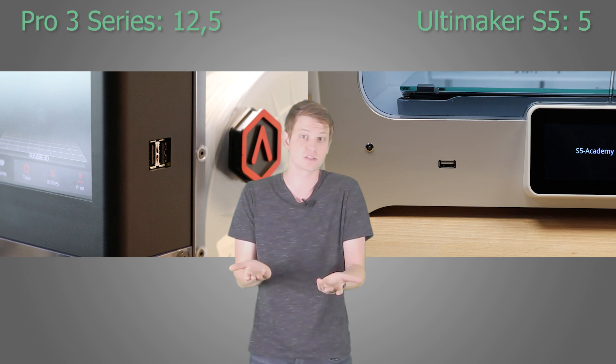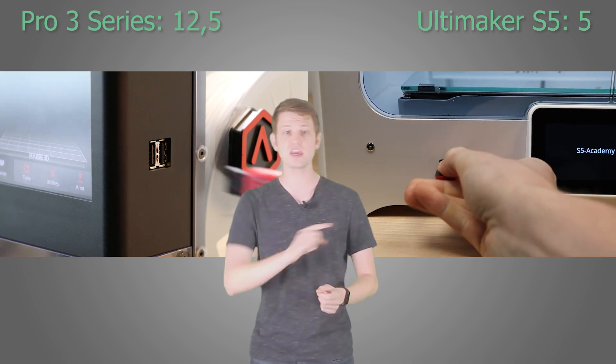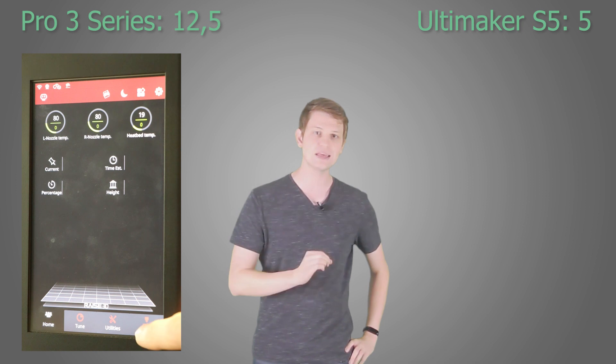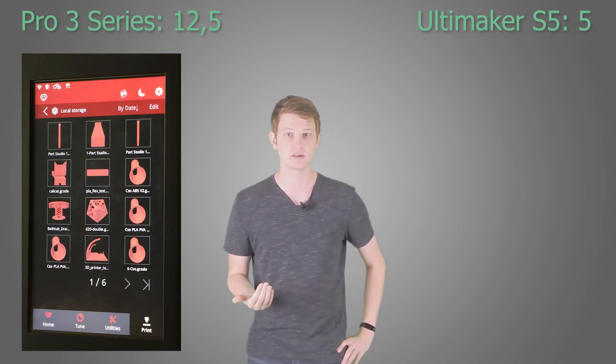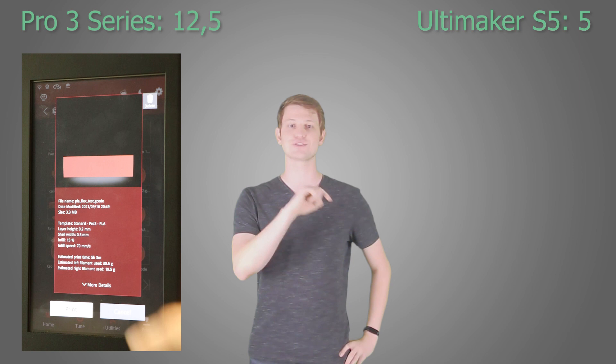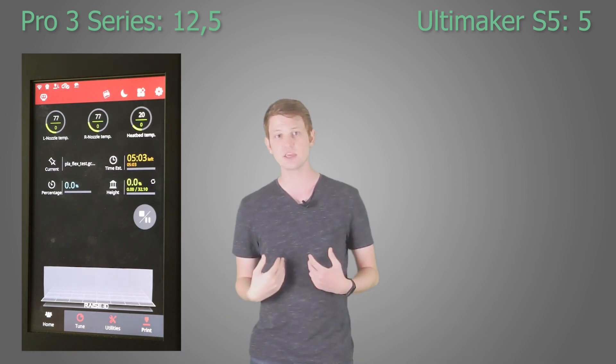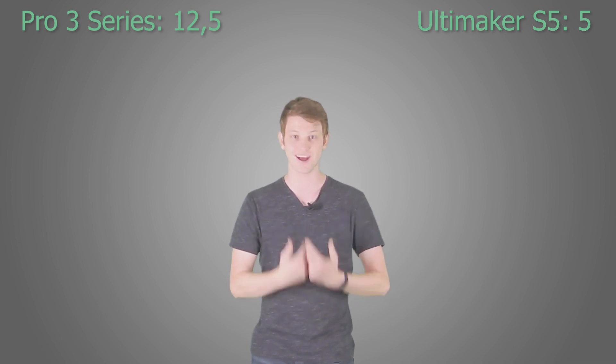When it comes to getting your G-code to the printer, these cloud solutions are great. But what about an offline or local network solution? Also works! You can use USB sticks with either one of these printers. However, the Pro 3 series can accept direct file uploads to its 8GB of internal storage, allowing you to easily select and reprint even past files. The S5's upload only goes into RAM storage and will be gone after a printer restart. As I use this direct upload to local storage of the Pro 3 series a lot, this means a point for the Pro 3 for me.